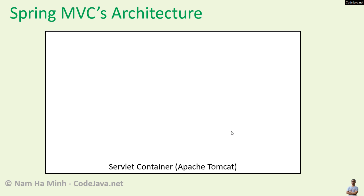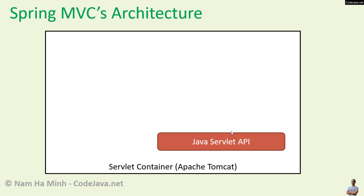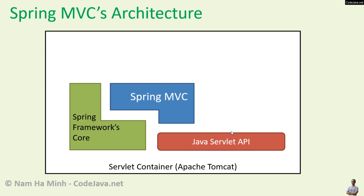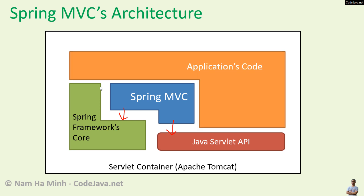Let's look at the architecture of a typical Spring MVC application. A Spring MVC application is running on a Servlet container such as Apache Tomcat. The Servlet container provides the Java Servlet API, and Spring MVC is built on Spring Framework's core and Java Servlet API. The application code could be built on Spring Framework's core, Spring MVC, and Java Servlet API.